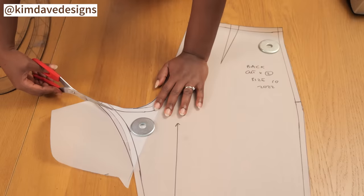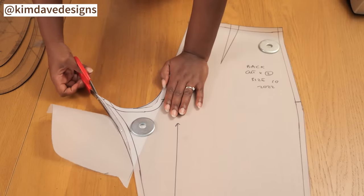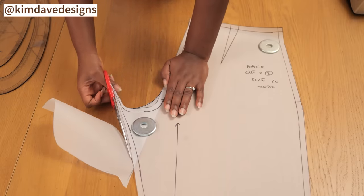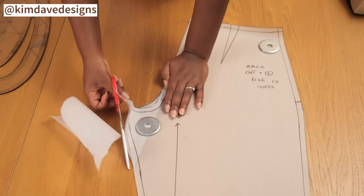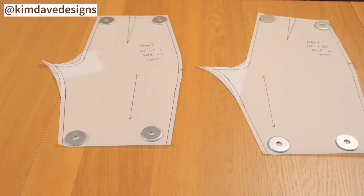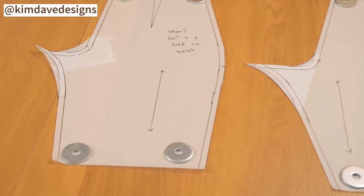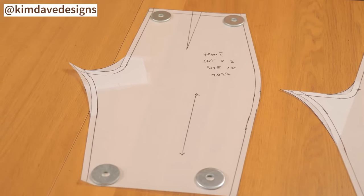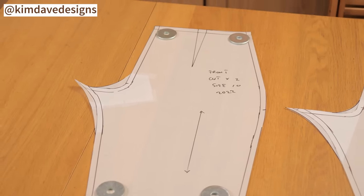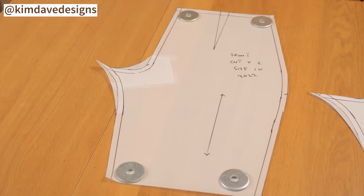Once I have these changes done on the back, I always like to test changes and patterns onto calico or any inexpensive material, just to see that it's going the way I want and it's a pattern that I can then use again in the future, because I have an idea of how it fits on the body.